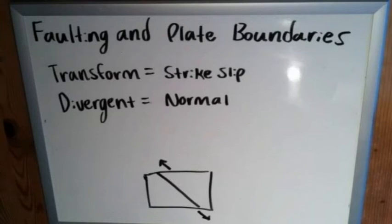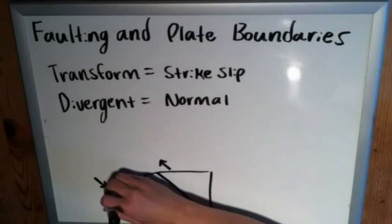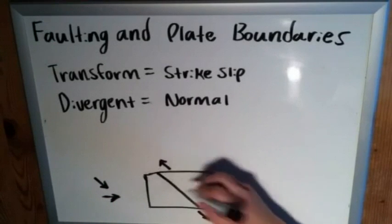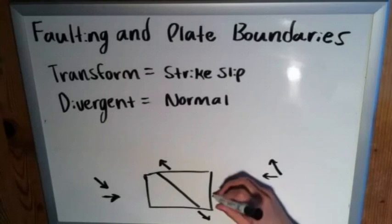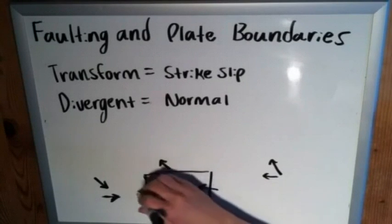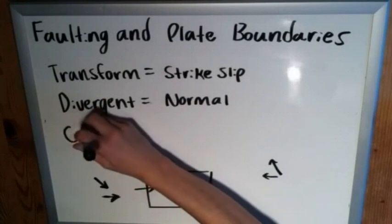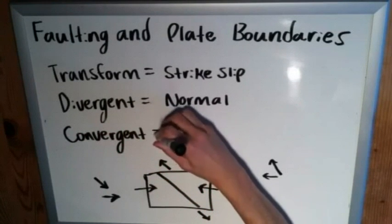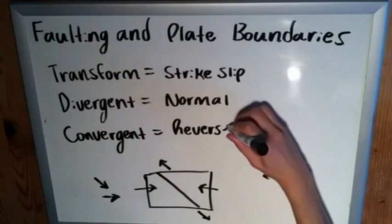Since divergent is normal, convergent should be the reverse. If we do the same process here — the one on the left is moving downwards and to the right, so the horizontal component goes to the right; this one is moving upwards and to the left, so the horizontal component goes to the left — if we draw these together on the blocks, you'll see that they are in fact coming together. So convergent plate boundaries are the homes of reverse faults.